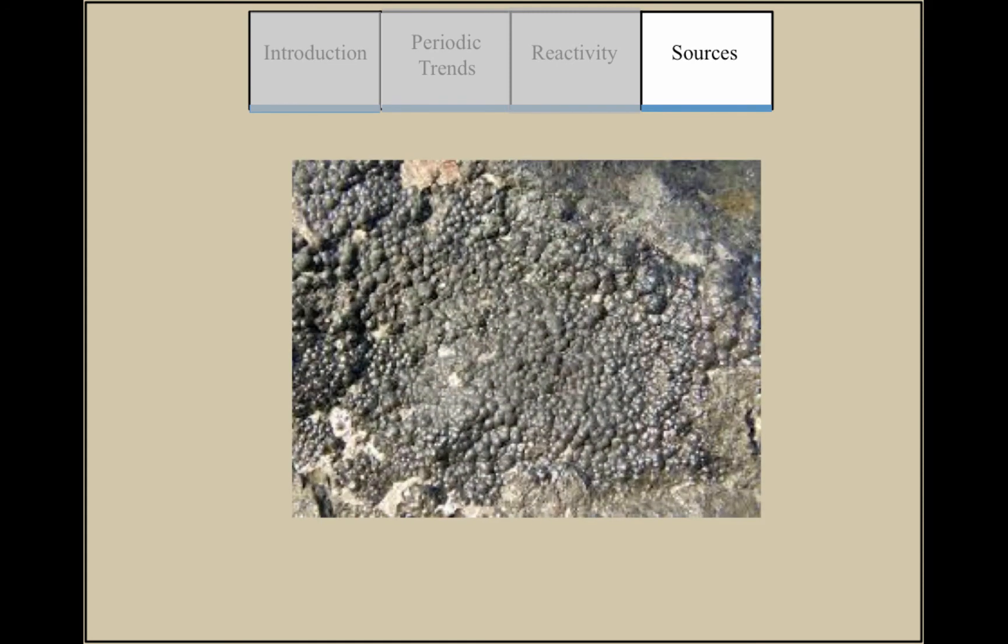Minuscule amounts of Prometheum can be found in uranium ore as a byproduct of uranium decay.